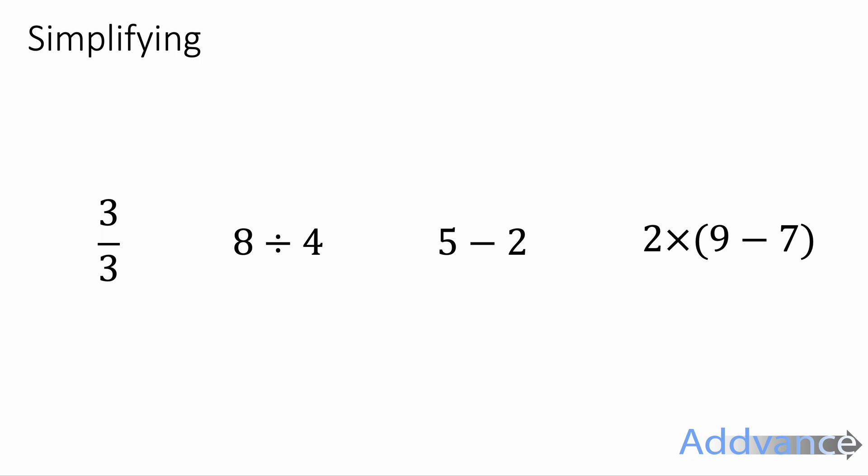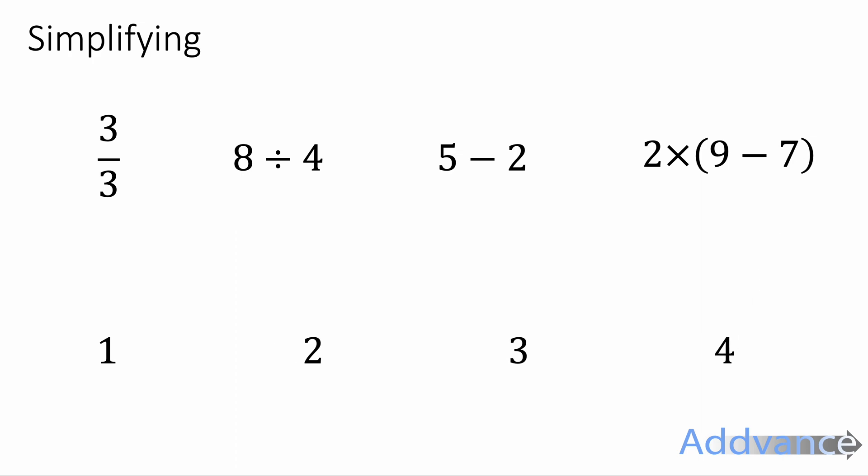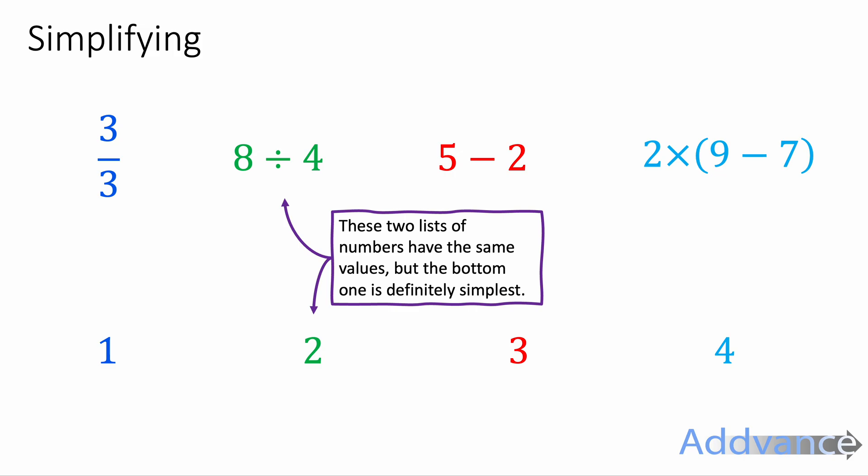So what does the word simplifying mean? Well, we've got some expressions here on the screen. Three thirds is the same as one. Eight divided by four is the same as two. Five minus two is the same as three. Two times nine minus seven equals four. We've simplified the numbers on the top to be one, two, three, and four. These two lists of numbers have the same values, but the bottom one is definitely simpler.